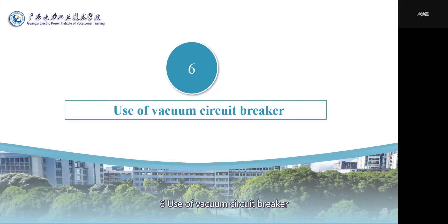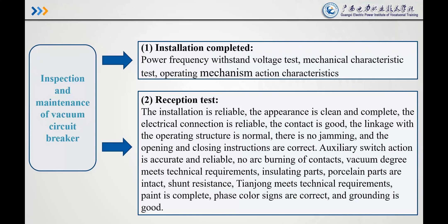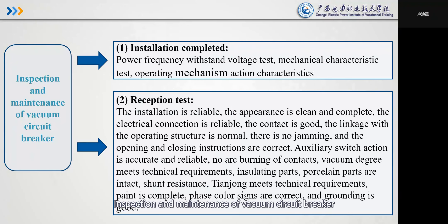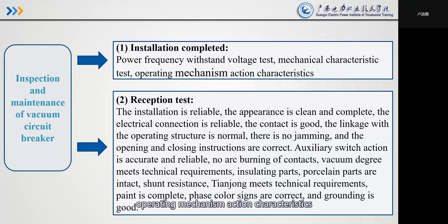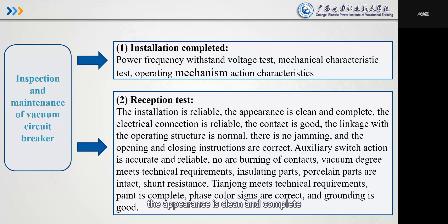Section 6: Use of vacuum circuit breakers. After installation is completed: (1) Power frequency withstand voltage test; (2) Mechanical characteristic test — mechanical action characteristics and resection test; (3) The appearance is clean and complete; (4) The electrical connection is reliable; (5) The contact is good; (6) The linkage with the operating structure is normal.